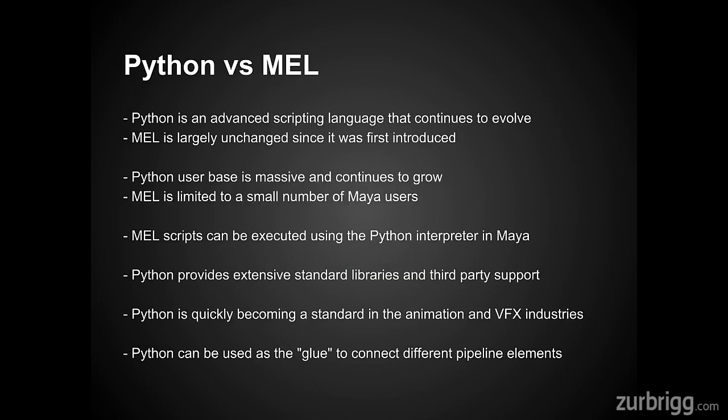There are many reasons and benefits for using Python. Python is an advanced scripting language that has been developed over the past 20 years and continues to evolve to this day. Mel, on the other hand, is largely unchanged since it was first introduced with the original versions of Maya.